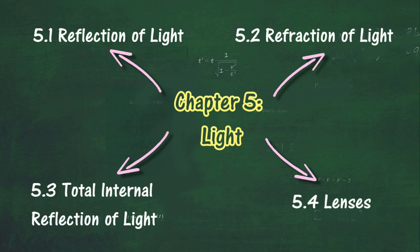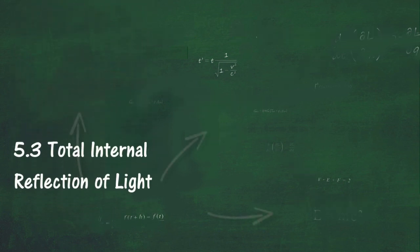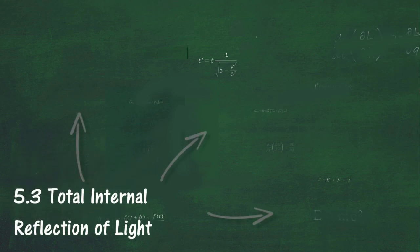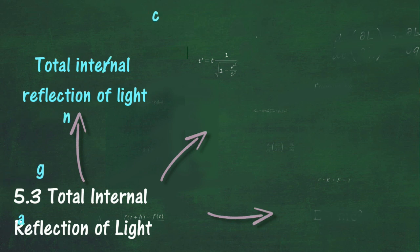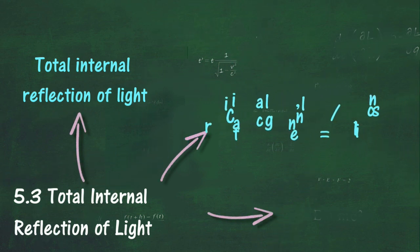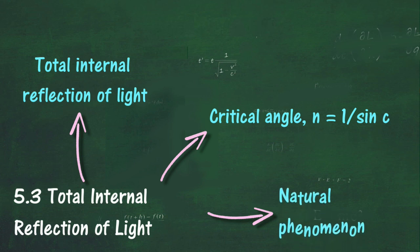In Section 5.3, we will learn about Total Internal Reflection of Light. At the end of this section, you should be able to: explain Total Internal Reflection of Light, define critical angle, relate the critical angle to the refractive index — that is, n = 1 / sin c — describe natural phenomena involving total internal reflection, describe applications of total internal reflection, and solve problems involving total internal reflection.